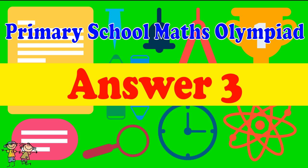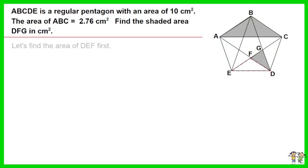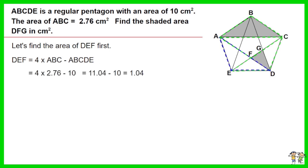Answer for Question 3: Let's find the area of DEF first. ABC equals ACF equals CDE equals ADE. However, ADE overlaps CDE with an area size of DEF. As such, 4 times ABC minus the size of pentagon ABCDE equals DEF. 4 times ABC equals 4 times 2.76. ABCDE equals 10. Work out the equation: DEF equals 1.04.